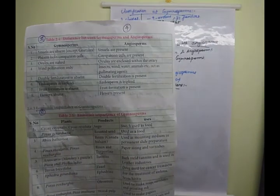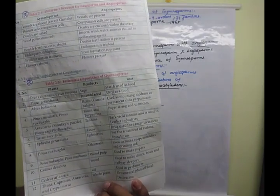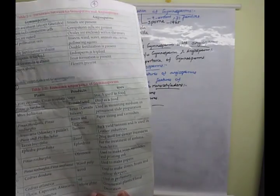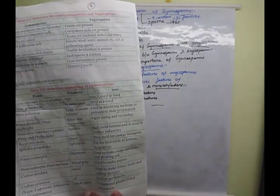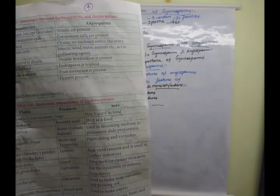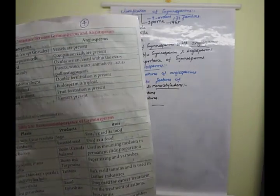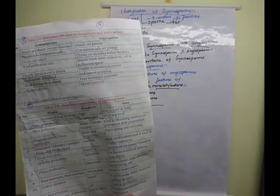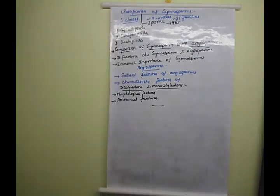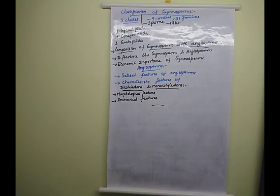Cedar deodara is a gymnosperm plant from which wood is obtained, used for making doors, boats, and railway sleepers. Cedrus atlantica yields a valuable oil used in perfume preparations. Species like Thuja, Cupressus, Araucaria, and Cryptomeria are used as ornamental and decorative plants.